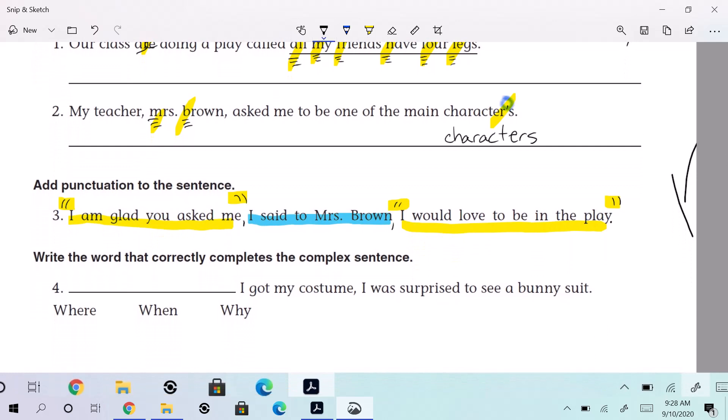Write the word that correctly completes the complex sentence. Blank. I got my costume. I was surprised to see a bunny suit. All right. Richard Hips. Yes, sir. Richard Hips says, when? Let's plug in the other ones just to make sure. Where I got my costume, I was surprised to see a bunny suit. Does it make sense to say that? No. And then why I got my costume, I was surprised to see a bunny suit. Does that make sense? No.